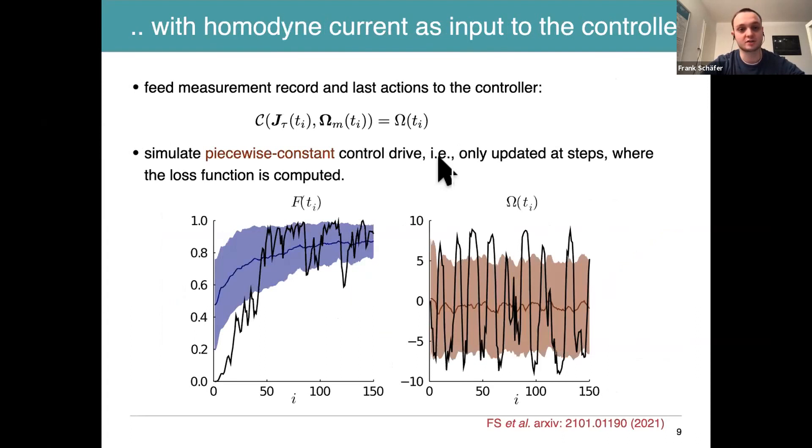Let me come to the feedback of the homodyne current. For the homodyne current, you feed back to the controller a record of the homodyne currents during the evolution of the stochastic differential equation and the last measurements, and you ask the controller to map this information to the next drive value. In this case, we made it more complicated for the controller because instead of doing this at each time step, we assumed a piecewise constant control. We only updated the steps at the time points where the loss function is computed. What you see here is that you still reach large fidelities, not as quickly as before because you first have to get information from the current measurements to pinpoint where your state lives on the Bloch sphere, but then you also reach pretty large fidelities.